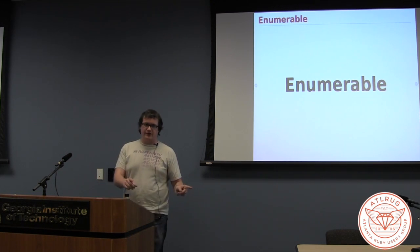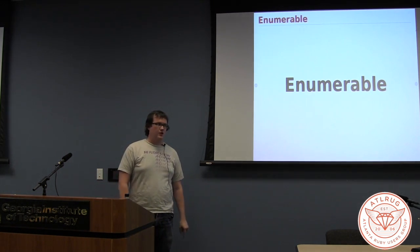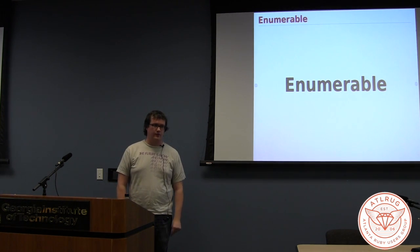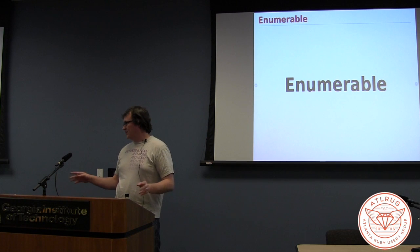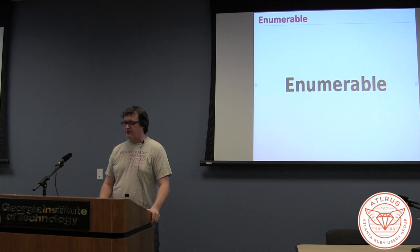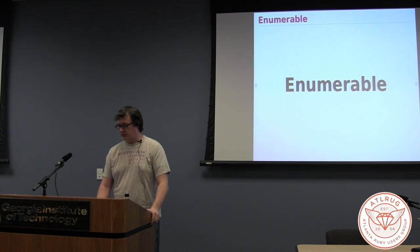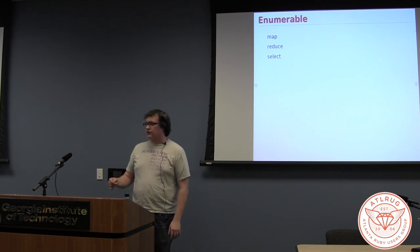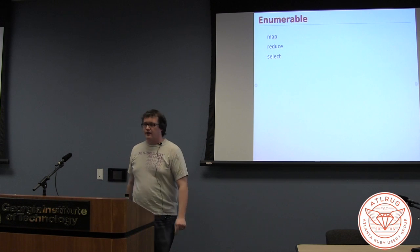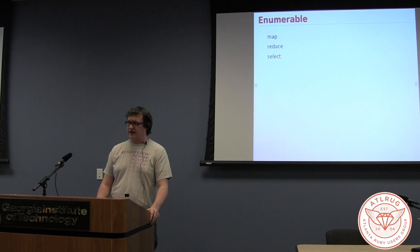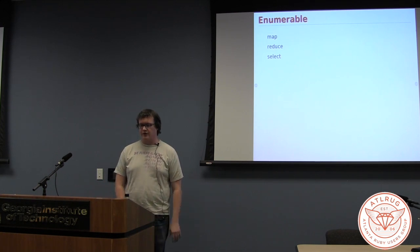So before we jump into functional reactive programming, we're going to go over something that hopefully all of you have used, which is the Ruby Enumerable module. Hopefully everyone's familiar. Functional reactive programming libraries and the Enumerable module are fairly similar in terms of what they look like, but the way they work is drastically different. So I'm going to go over three slightly small-fonted pieces of the Enumerable module: map, reduce, and select. And these are kind of some of your functional components.